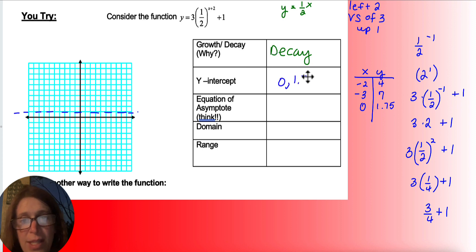So I've got my 0, 1.75. So negative 2, 4: 1, 2, 3, 4. Negative 3, 7: 3, let's see, 1, 2, 3, and then 1, 2, 3, 4, 5, 6, 7. And then 0, 1.75, so right about there. And there's my decay function.